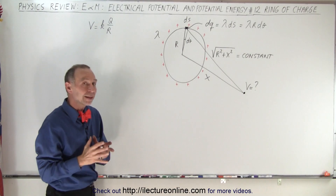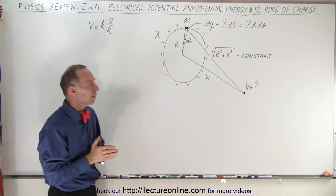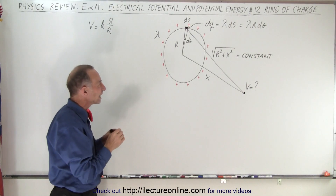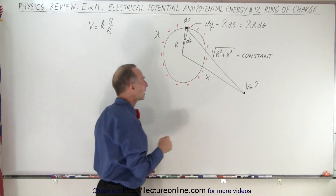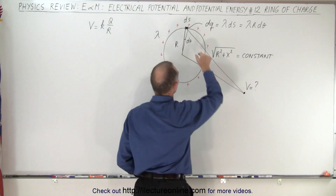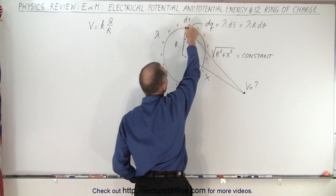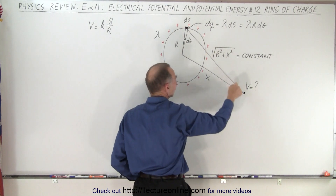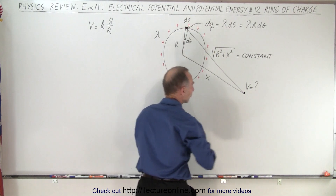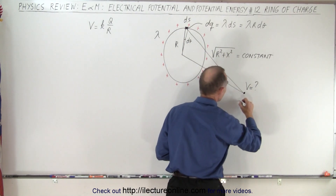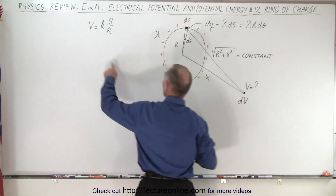The nice thing about finding the potential is that direction doesn't matter — only the distance matters. So if we take a small little segment, we call that dq, we want to find the potential over here, which will therefore be a dv, using the equation that the voltage is kq over r.